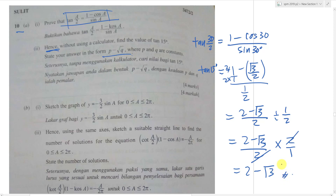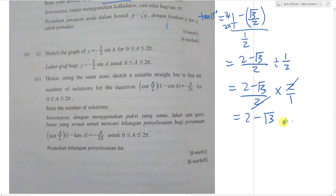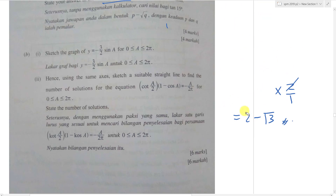This should be about 2 marks. Maybe 3 marks and 1 mark — it doesn't seem like just 1 mark since normally a 1-mark question you can write the answer straight away. If you have a faster method, feel free to share. Then they ask you to sketch the graph y = −(3/2)sin a. This one is quite easy.